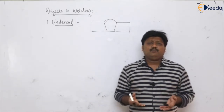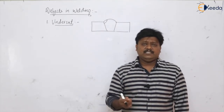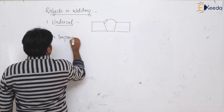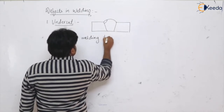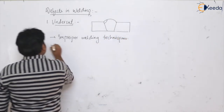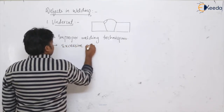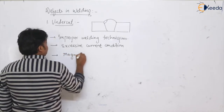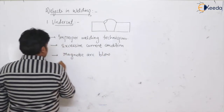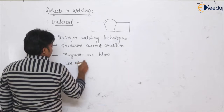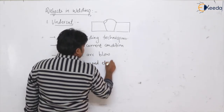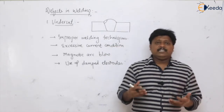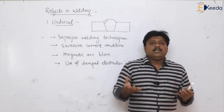The undercut defect is generally attributed to improper welding techniques and excessive current conditions. Another cause is magnetic arc blow, and the use of damp electrodes — that is, electrodes containing higher hydrogen content — are also responsible for this defect.